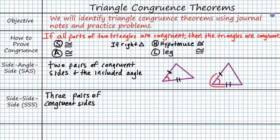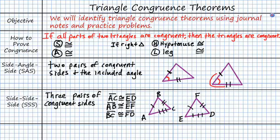Our next theorem is the side-side-side theorem, or SSS. That tells us that if you have three pairs of congruent sides, then the triangles will be congruent — one pair, two pairs, three pairs. No matter what the diagram looks like, if you see those three congruent side markings, you're going to have congruent triangles. If you have your points labeled, those three statements guarantee the congruence.